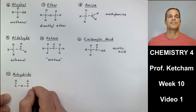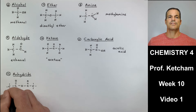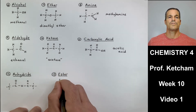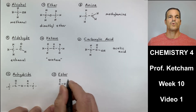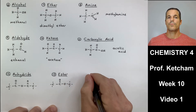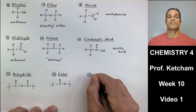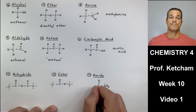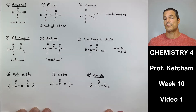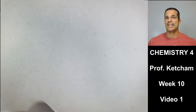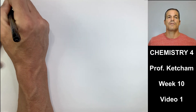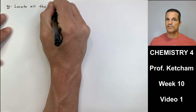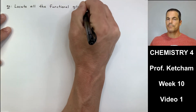Number twelve are anhydrides — we won't see many of these — which have two carbonyl C=O groups with an oxygen single-bonded in between. Number thirteen, esters, we will see a lot of: a carbon double-bonded to an O attached to a carbon on one side and an oxygen on the other. Number fourteen, amide, is a C=O with an NH2 off of it. We'll go through all of these over time — chapter 11 covers the first four, then chapter 12, then chapter 14.